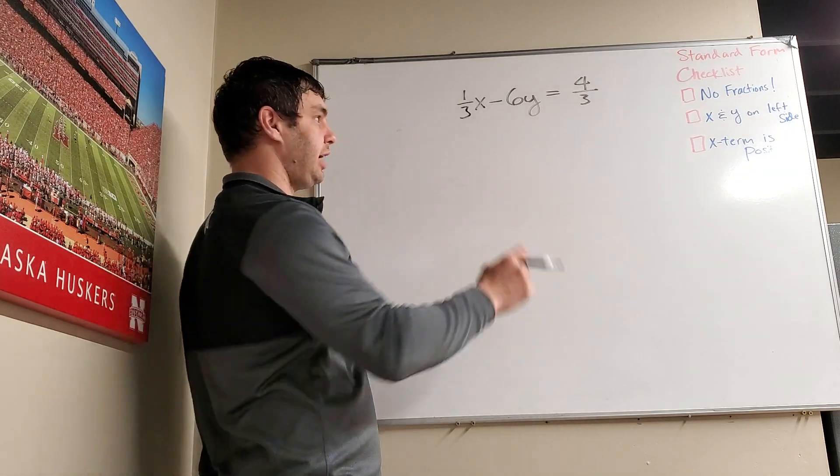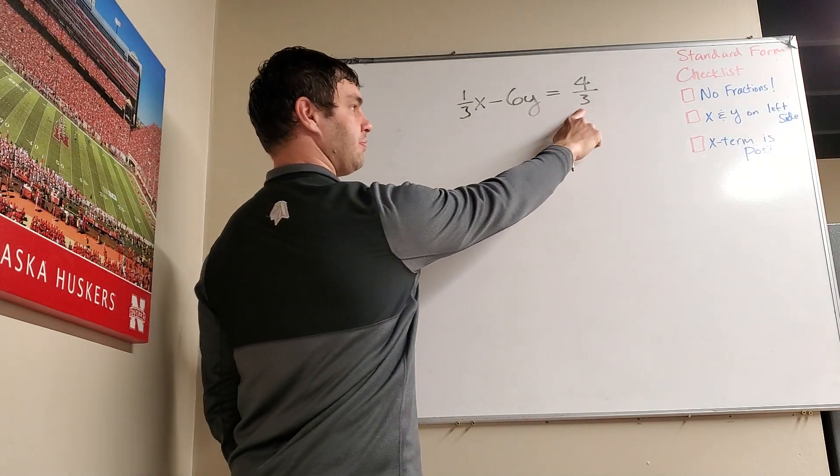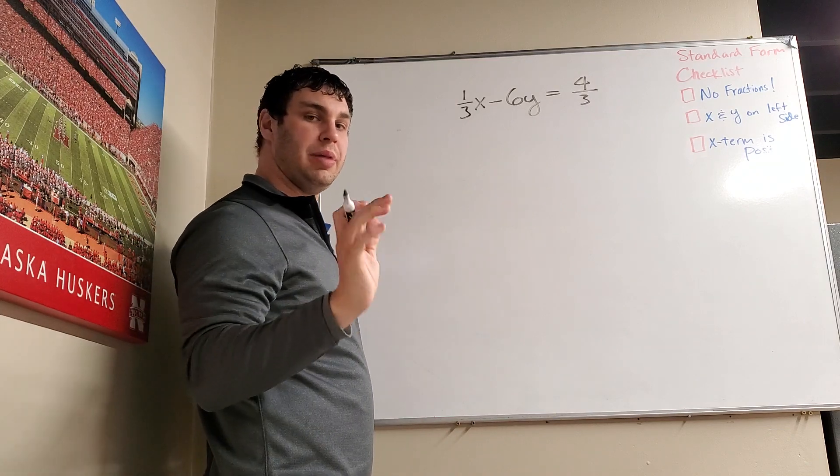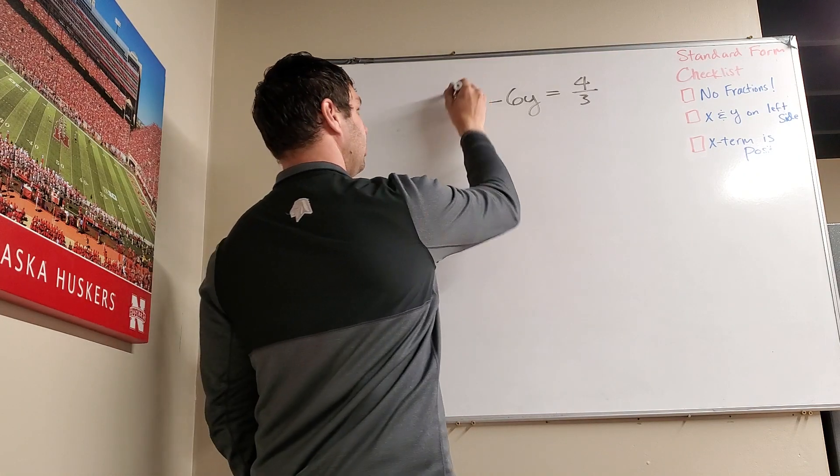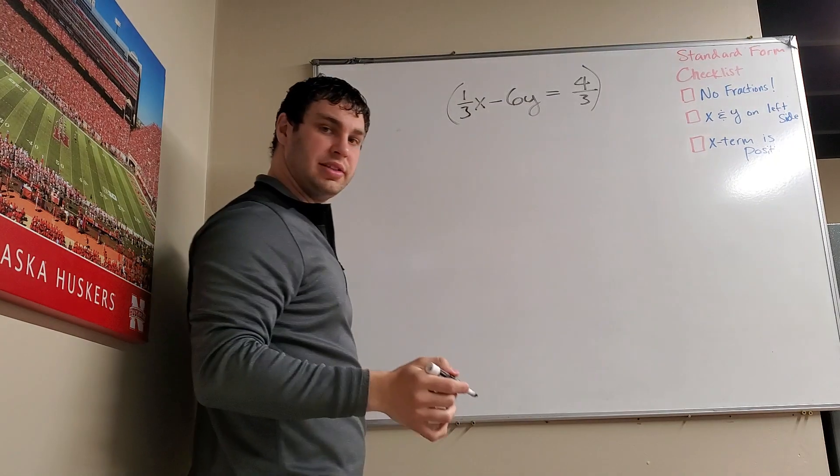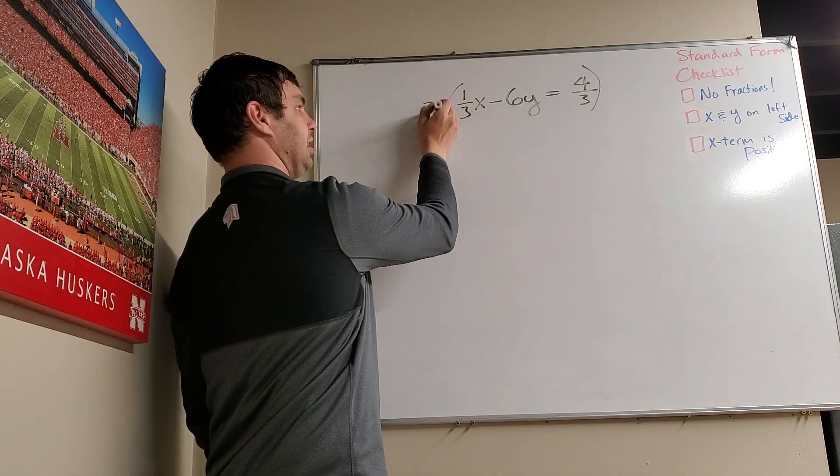In order to get rid of a fraction, you look at the denominator and multiply the whole thing by that number. So I'm going to put parentheses around my problem and multiply it all by 3.